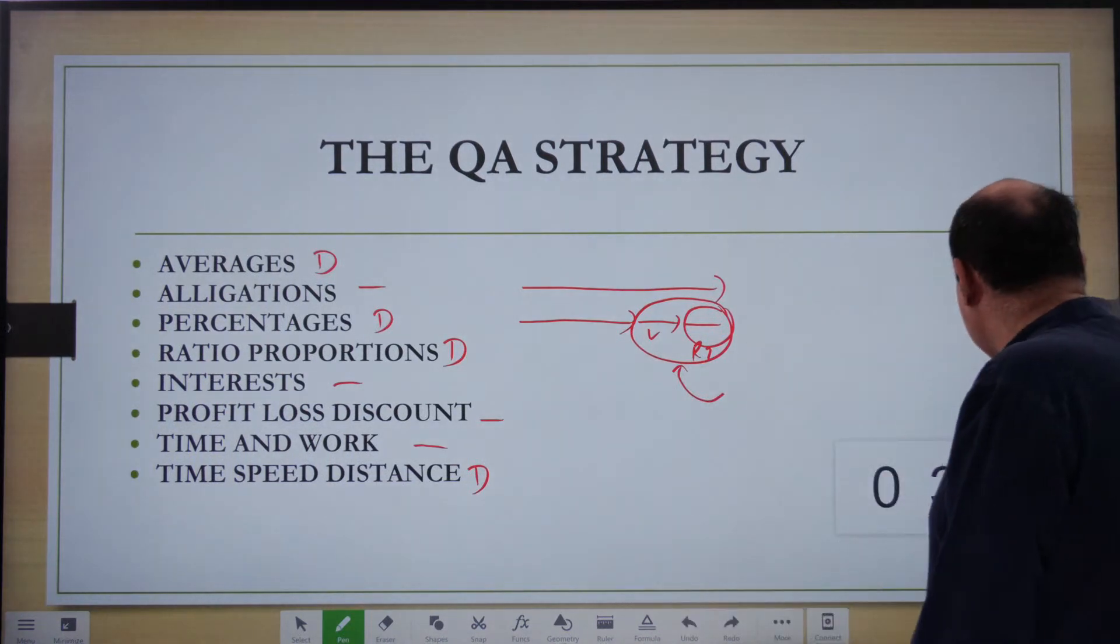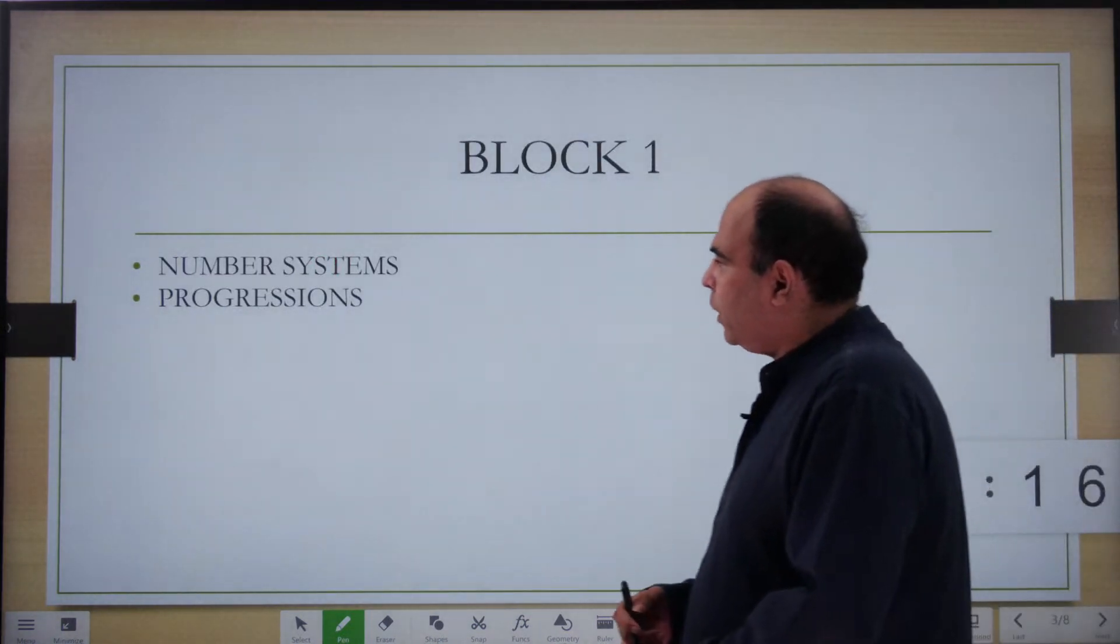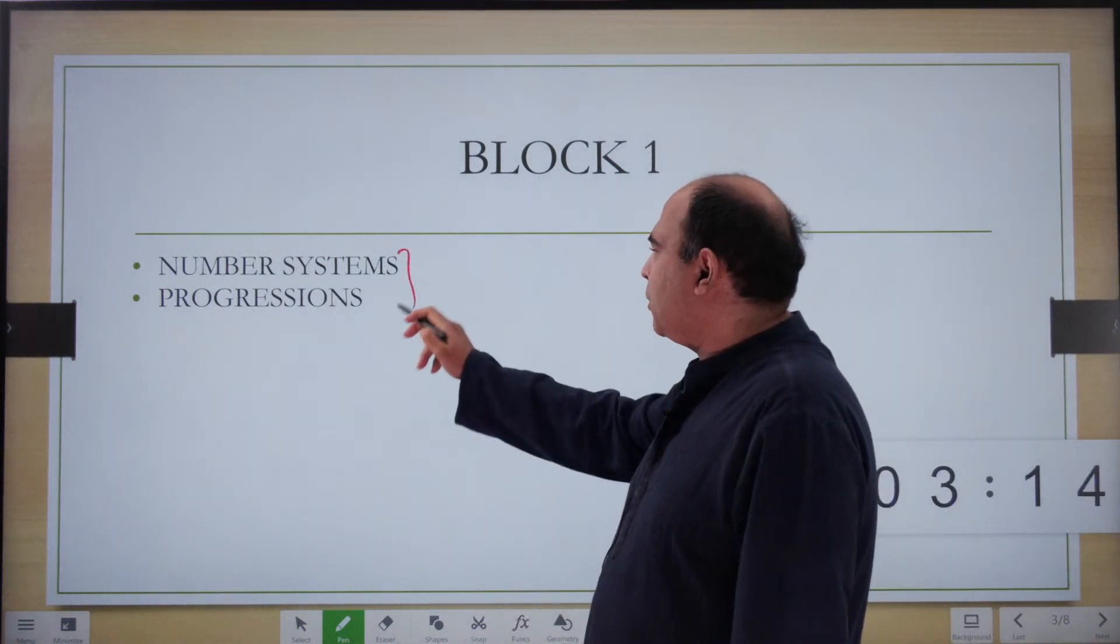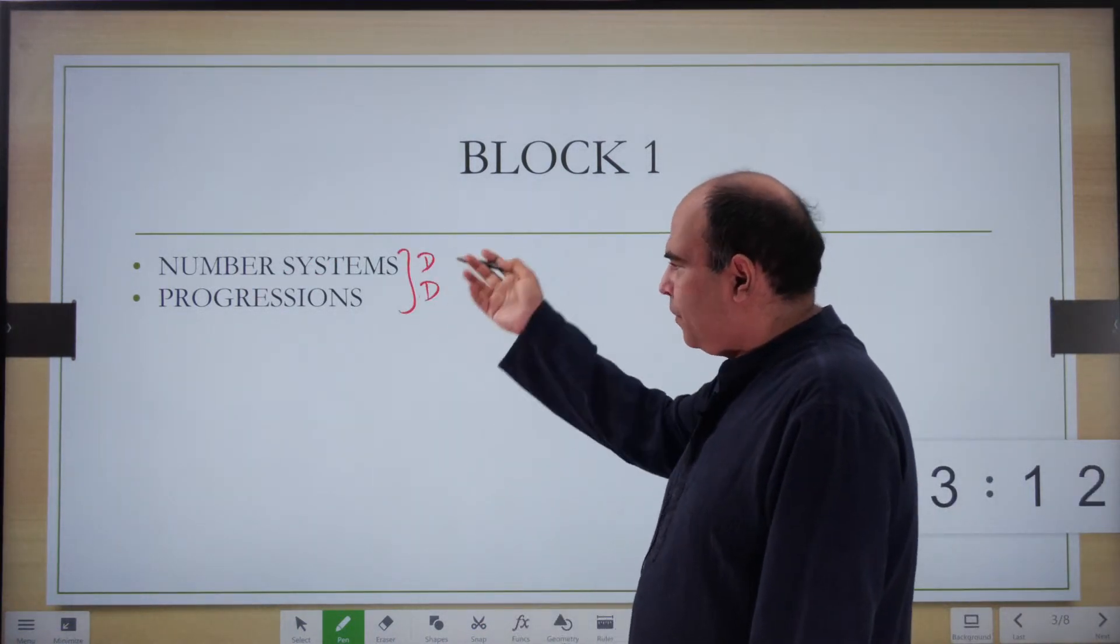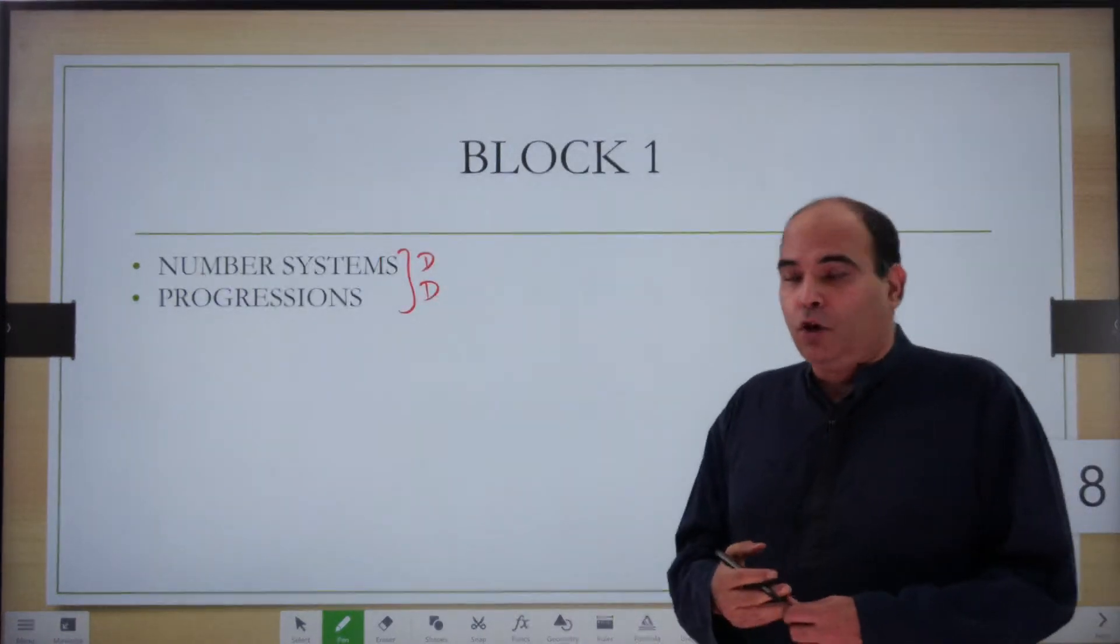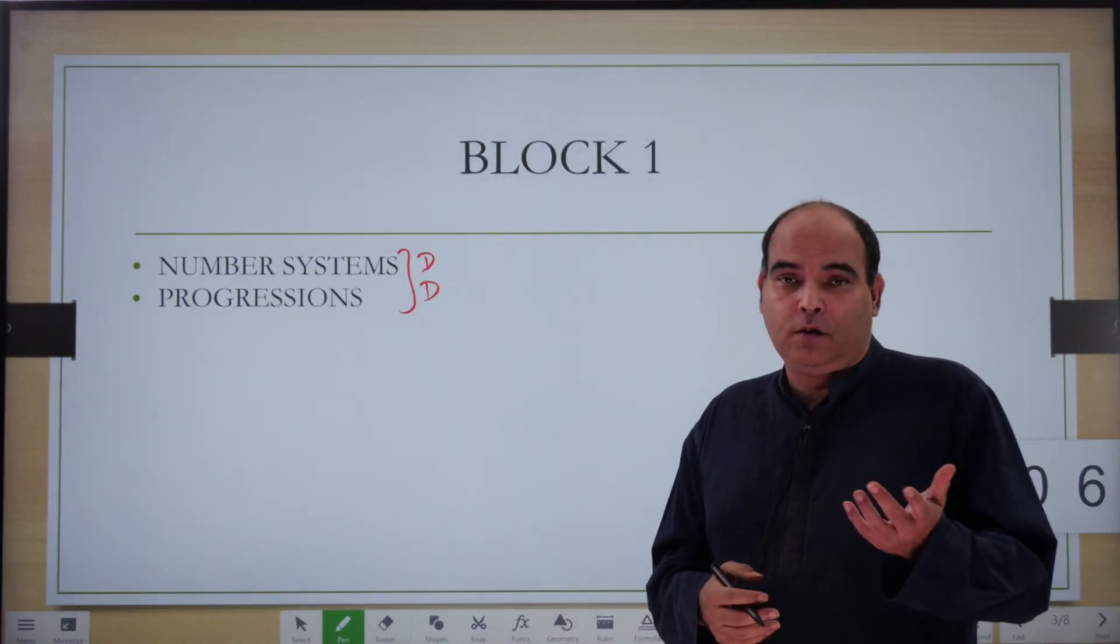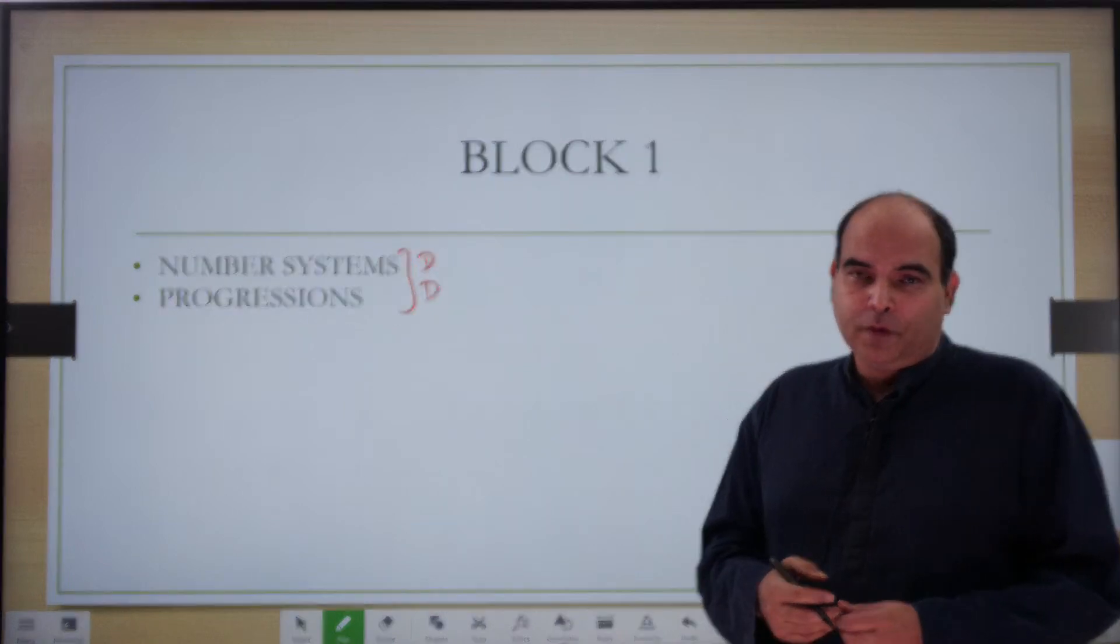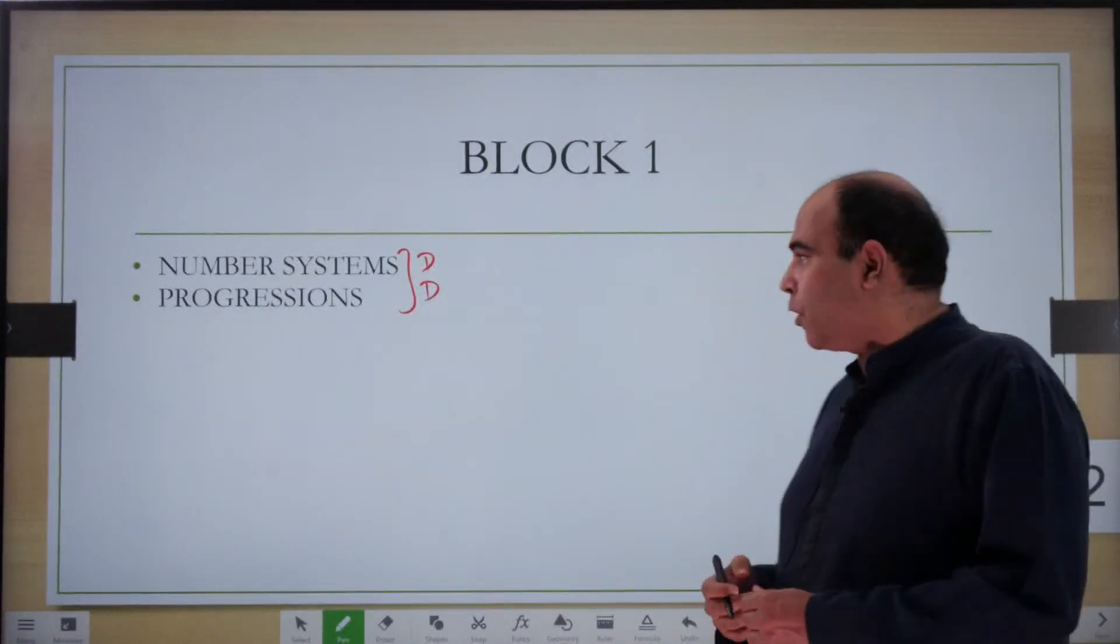Block 1: both these chapters are deep dive because you'll see a lot of questions on this. You have around seven to eight questions normally from Block 1, and four questions from a chapter will obviously make the chapter important. All the number systems is a very very deep chapter.